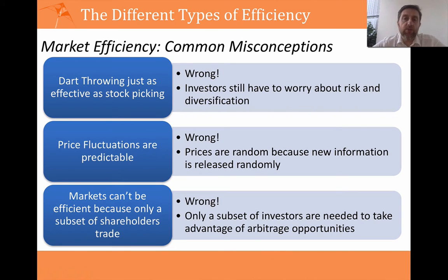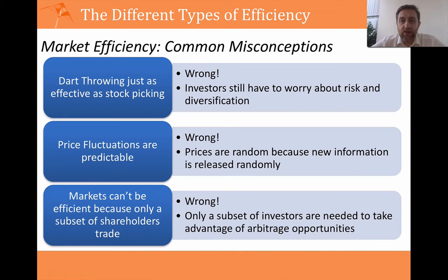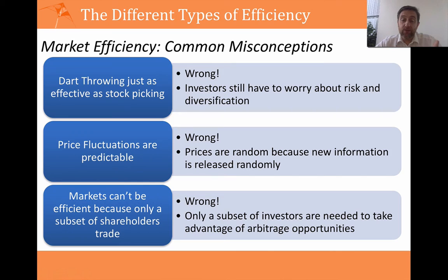There are some misconceptions about market efficiency and I'm going to talk about three of those. The first is what we call the dart throwing misconception. The statement is that if you can't earn excess returns on average, then you can choose any investment — it doesn't really matter, just choose anyone, because you're going to perform just as well as spending all this time doing analysis and picking companies for your portfolio. But that's wrong, because if you just randomly select securities, you're not controlling for risk and you're not maximizing the effect of diversification.